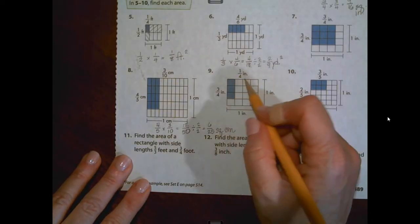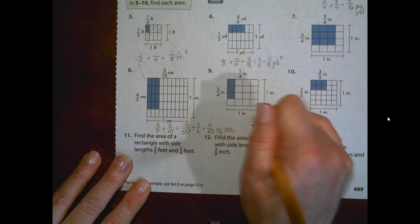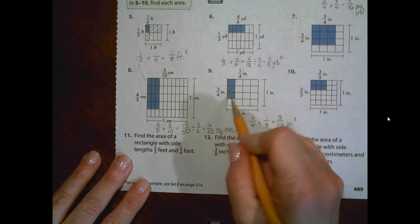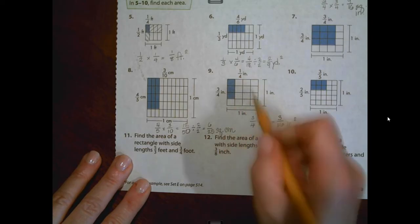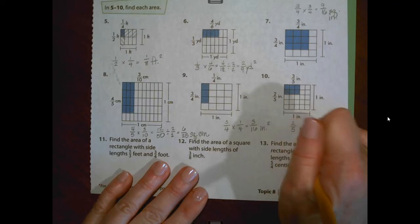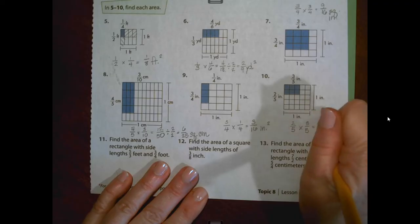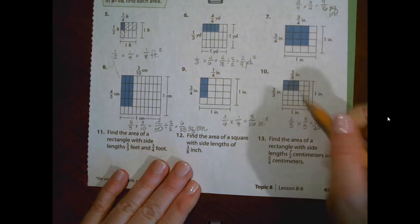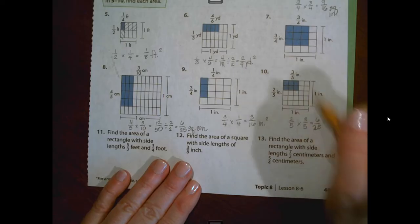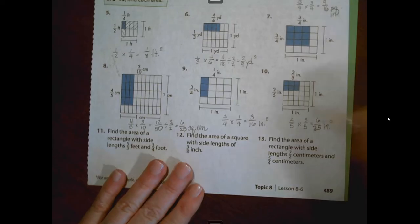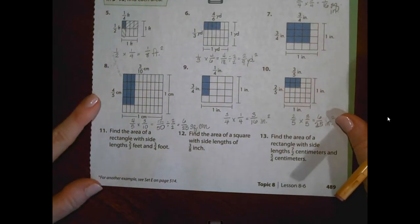Number nine, I look at it. I see that I have three-fourths by one-fourth inch. That gives me three-sixteenths inches squared. Or I could just look at it and see that I have four rows of four, 16 units in all. Three of them are shaded, and I don't have to simplify it. Number ten, we're looking at two-fifths and three-fifths for our two side lengths. That gives me six twenty-fifths. Another way to look at it, if you're not using the formula or not using the expression is you've got five rows of five, so 25 squares in all in this one unit, and you have six of them shaded. Six twenty-fifths does not simplify. So your product is six twenty-fifths inches squared, which is the area of this rectangle. Actually, this one's a square.